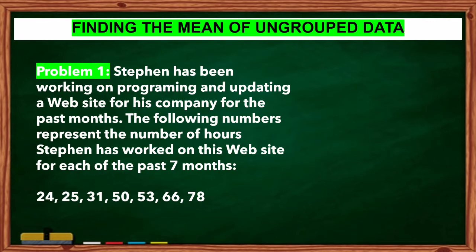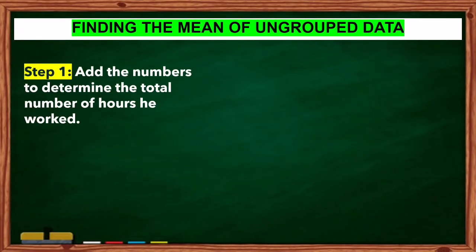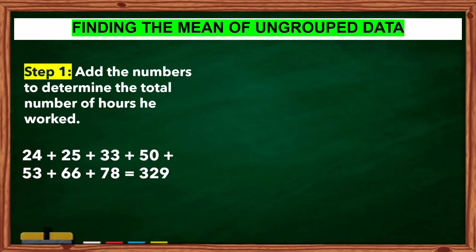Problem 1: The following numbers represent the number of hours Stephen has worked on this website for each of the past 7 months: 24, 25, 31, 50, 53, 66, 78. Step 1: Add the numbers to determine the total number of hours he worked. So, 24 plus 25 plus 33 plus 50 plus 53 plus 66 plus 78 is equal to 329.